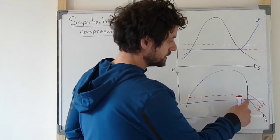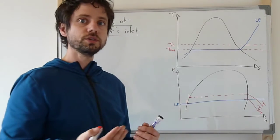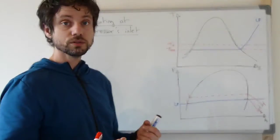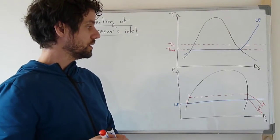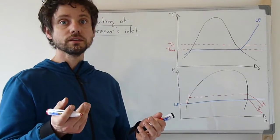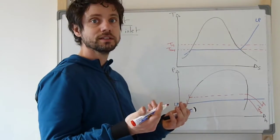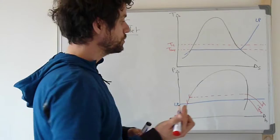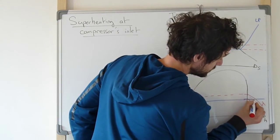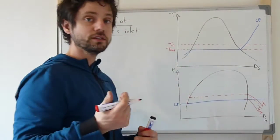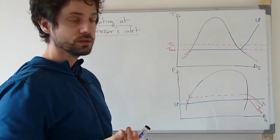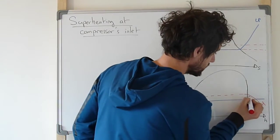We cannot go beyond the cold temperature, so the temperature of the cold source. So usually the superheat will fix an inlet temperature of the compressor that is somewhere between the evaporator temperature and the cold source temperature. So somewhere there, for example.